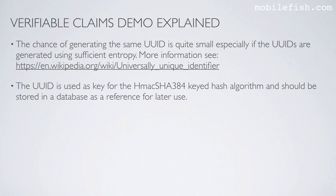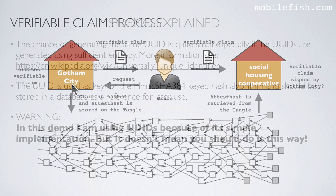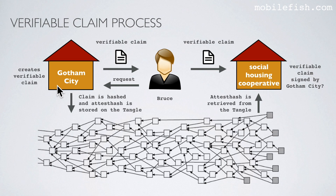The UUID is used as key for the HMAC SHA-384 key hash algorithm and should be stored in a database as a reference for later use. WARNING: In this demo I am using UUIDs because of its simple implementation, but it doesn't mean you should do it this way. As explained earlier, Gotham City creates the verifiable claim and the Social Housing Cooperative checks if the verifiable claim is signed by Gotham City. Now let's dive deeper into these two processes.